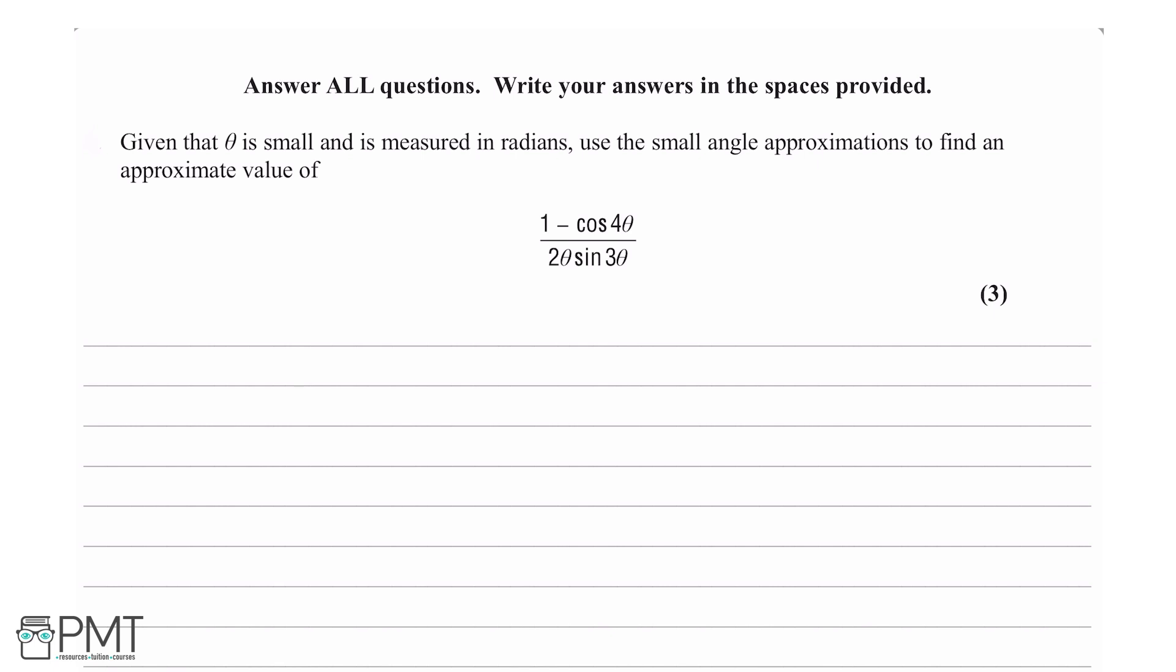Let's start by highlighting some important information given in the question. It says given that θ is small and measured in radians, use the small angle approximations. The reason this is important is because these are the conditions needed to use our small angle approximations.